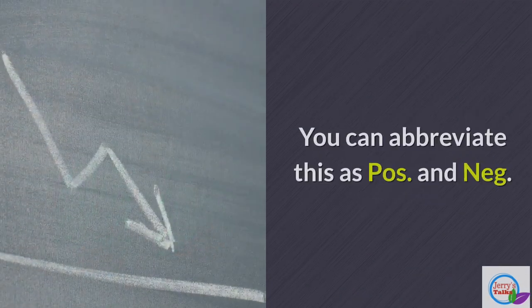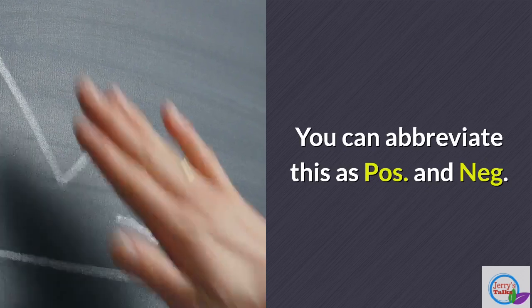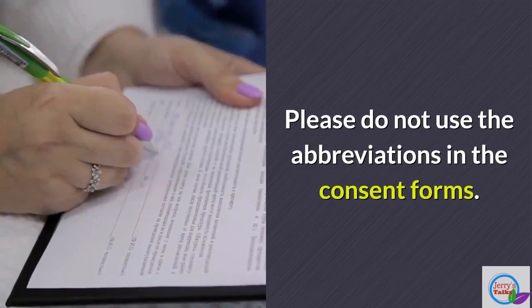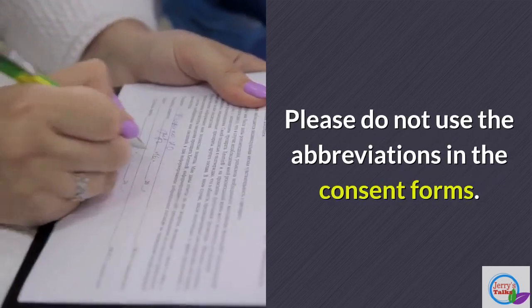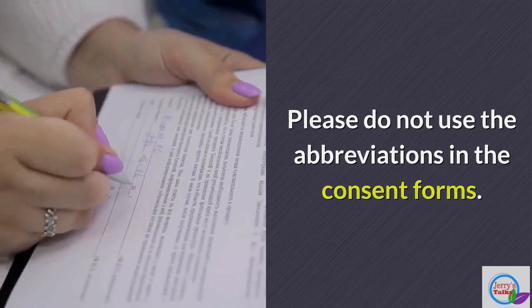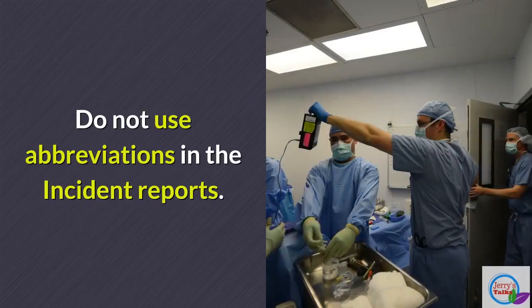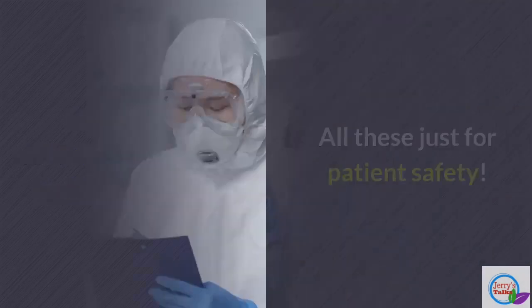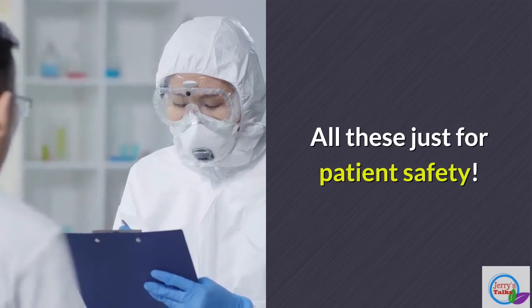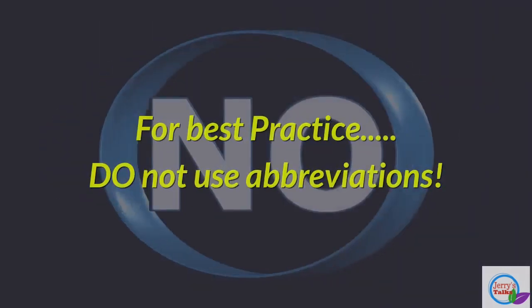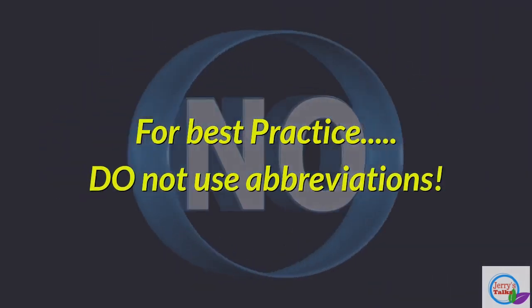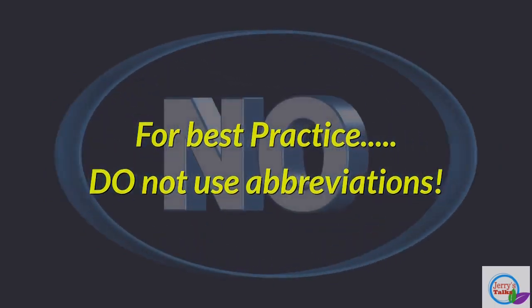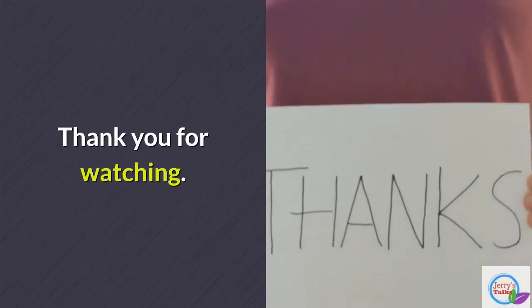You should not use the symbols '+ve' and '-ve' — you can abbreviate these as 'pos' and 'neg'. Do not use abbreviations in consent forms or incident reports. All of these rules exist for patient safety and best practice. Do not use abbreviations. Thank you for watching.